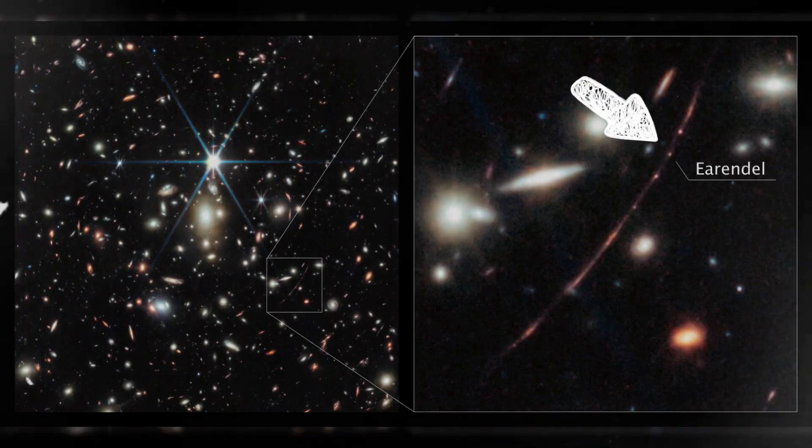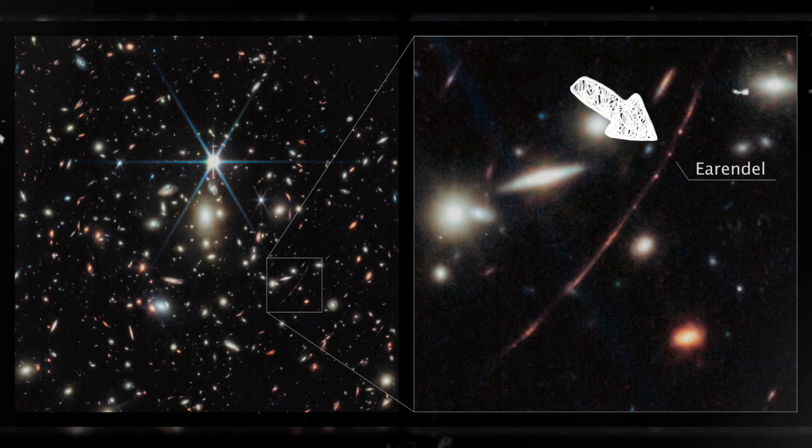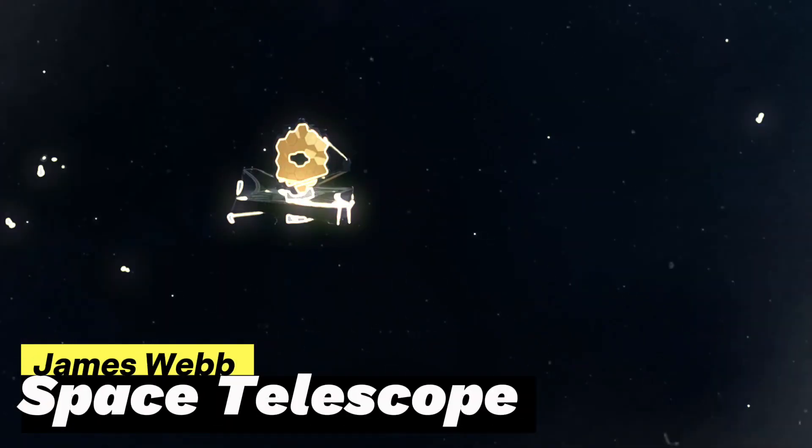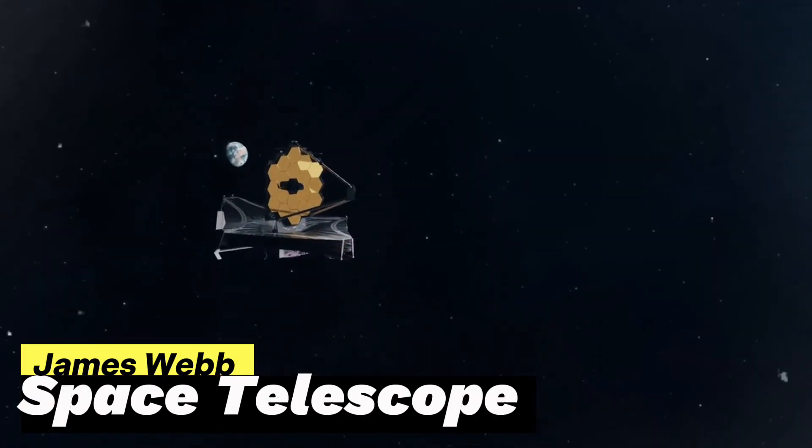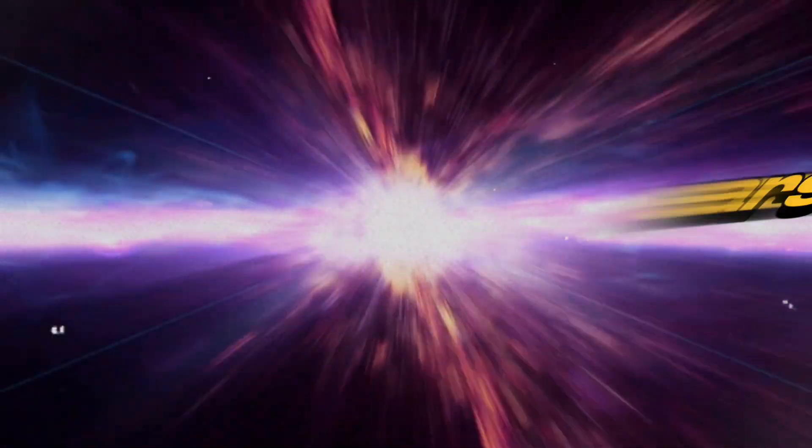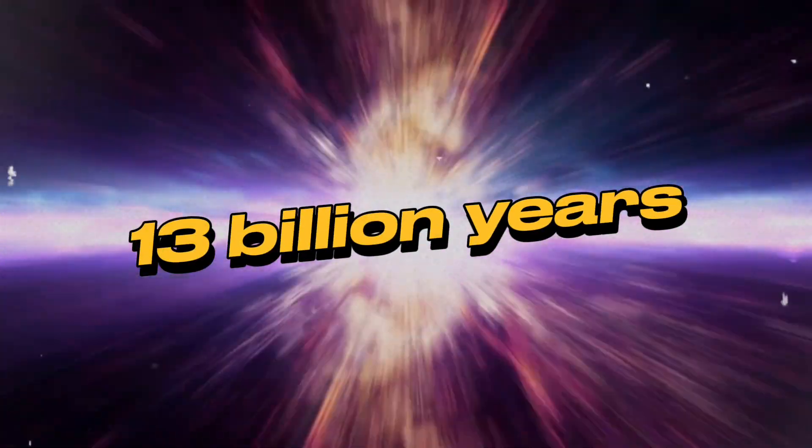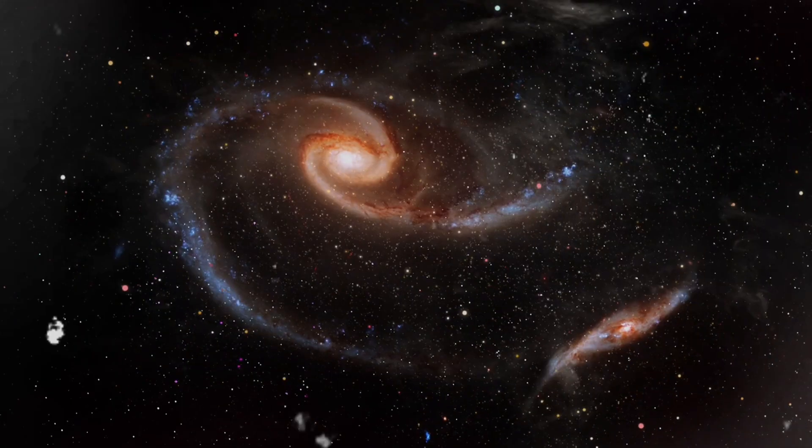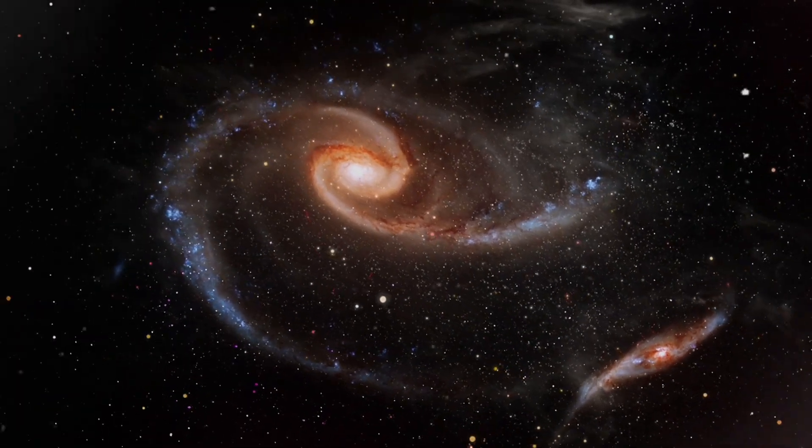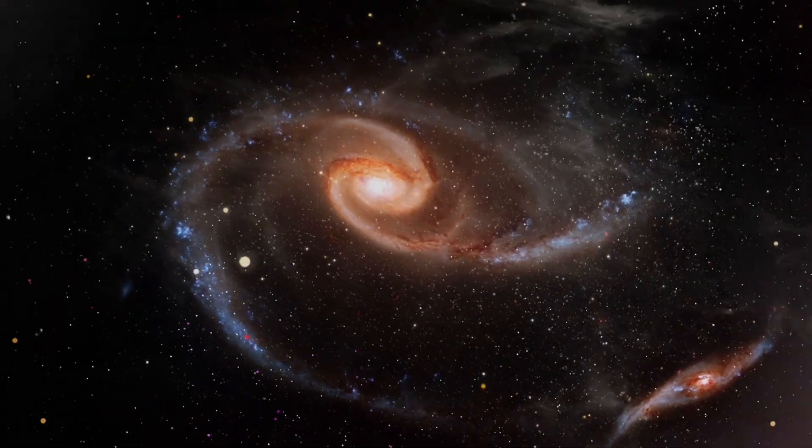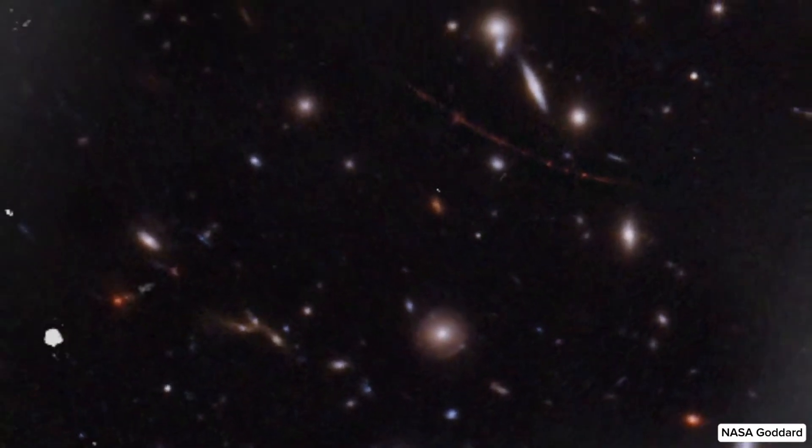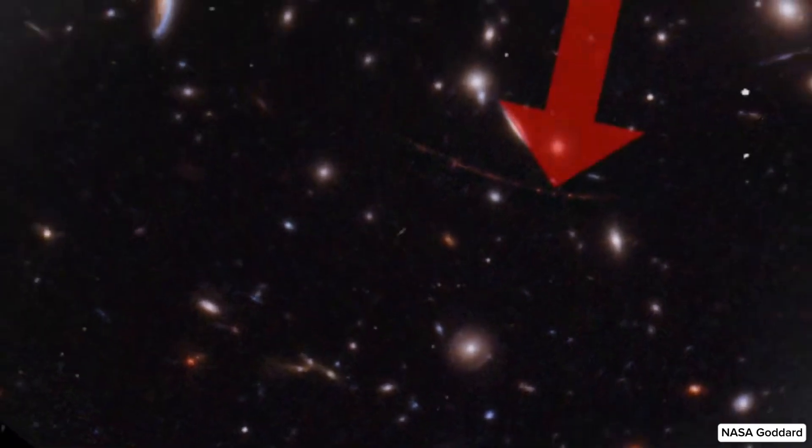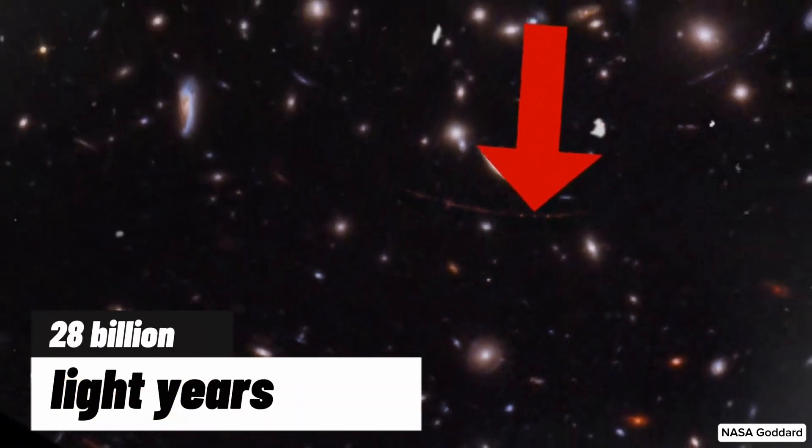Earendel, the most distant star ever observed, was discovered by the James Webb Space Telescope, and its mysteries have been exposed. It has taken 13 billion years for the light from Earendel to reach us due to a cosmically coincidental line of sight. This, however, does not imply that it is located 13 billion light-years away. Taking into account the expansion of the universe, the correct distance to this star is around 28 billion light-years.